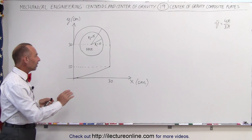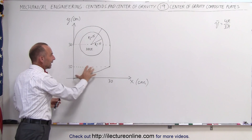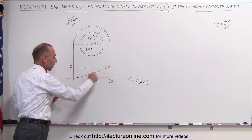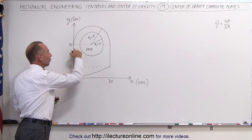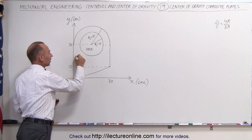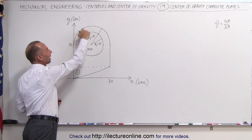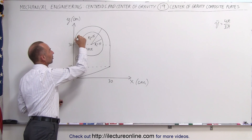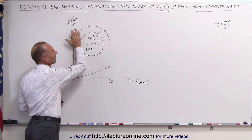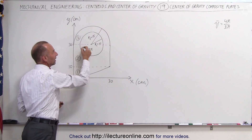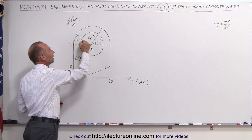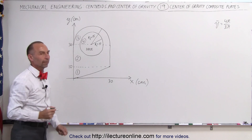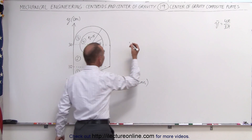We've divided our plate into different sections. We have the triangular section down here — let's call that section number one. We have a rectangular section, let's call that section number two. We have a semicircular section, let's call that three — we include the entire area here as a semicircular section. And then we have to subtract this hole, let's call the hole number four.